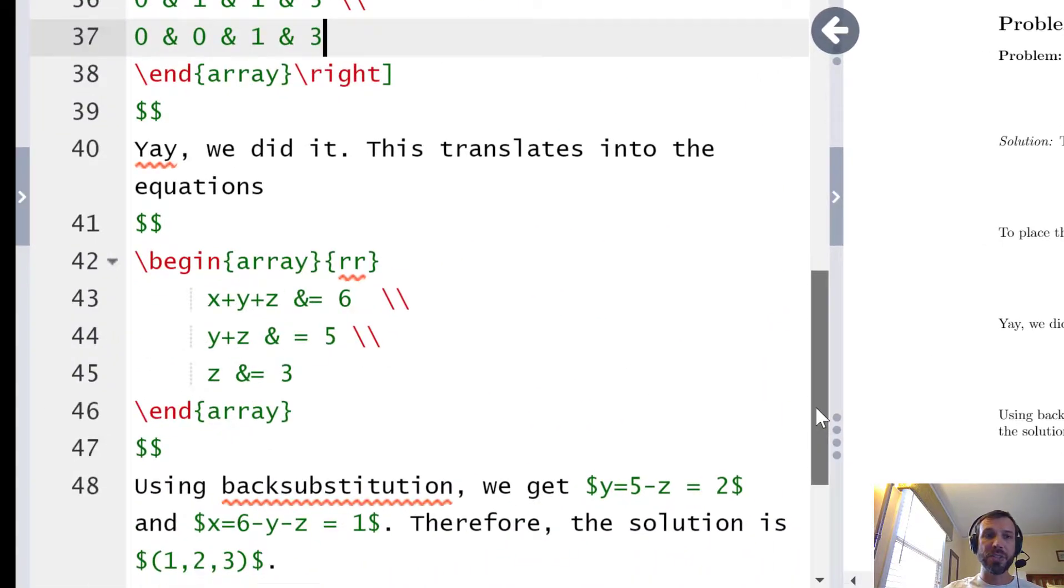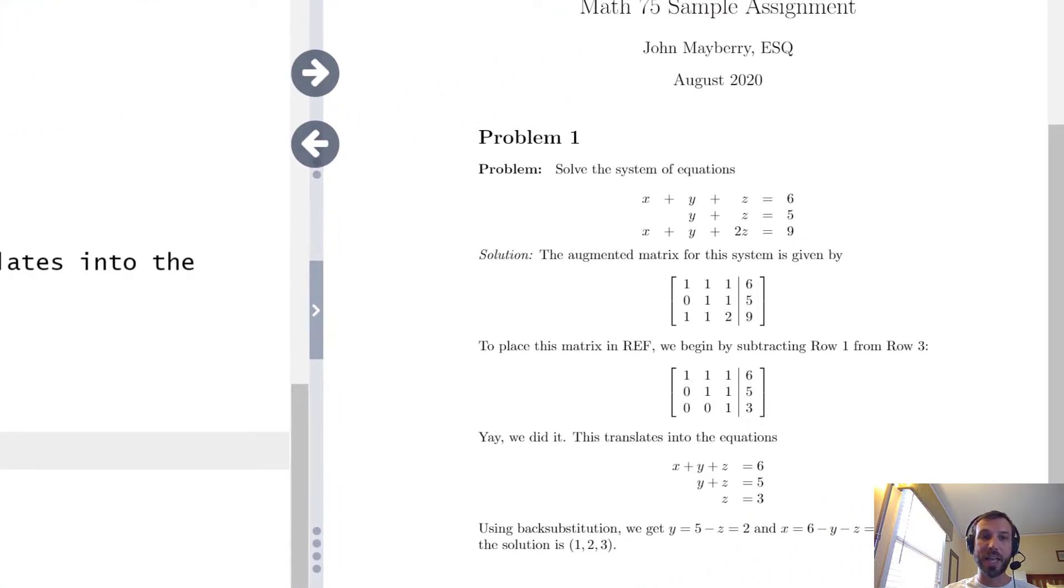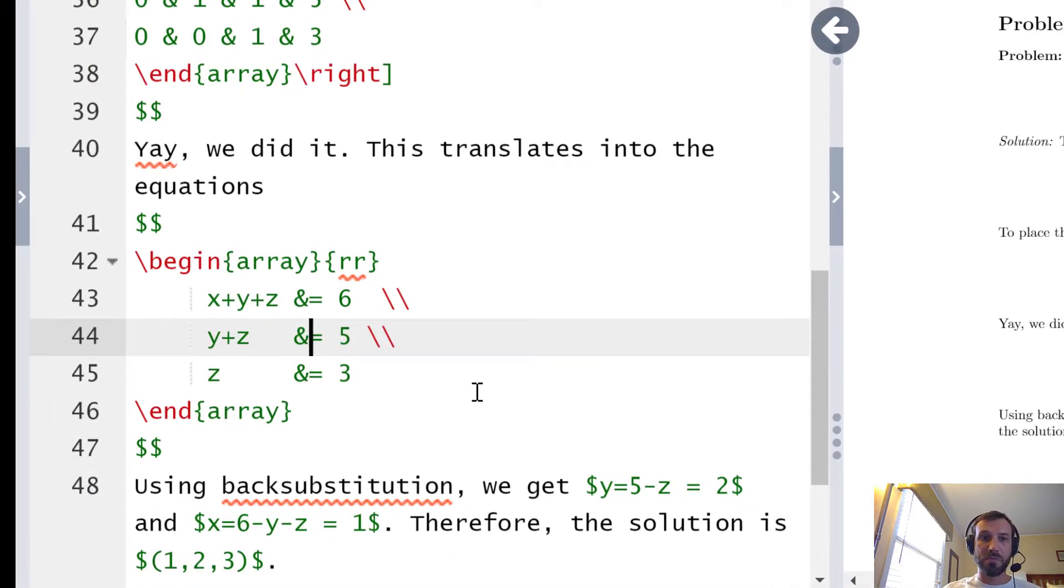The third place we've used the begin array is again in stating system of equations. Notice in this case I didn't take the time to bother lining up all the X's, Y's, and Z's. The only thing I'm lining up in this equation now is the equal signs. And just to demonstrate my earlier point that it really doesn't matter, notice that in the output even when I didn't have them aligned in the LaTeX document they were perfectly aligned over here. If I align them in the input it changes nothing in the output.